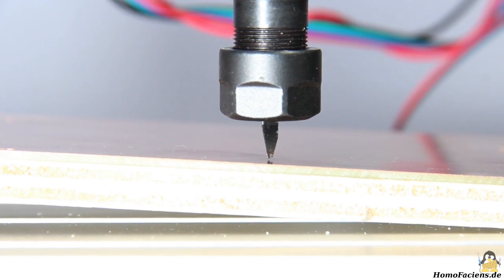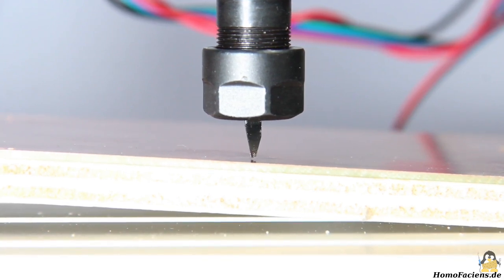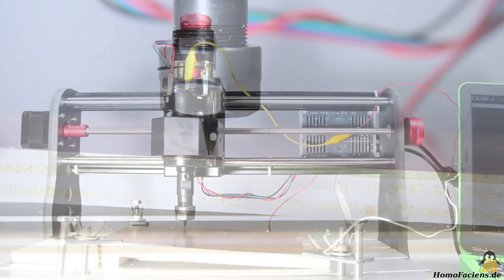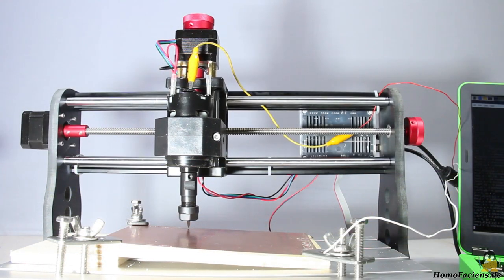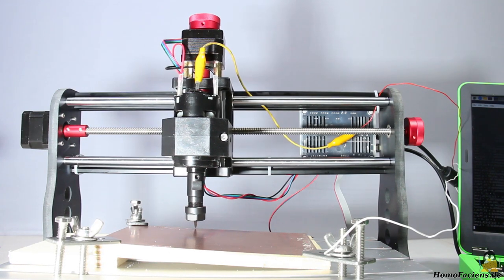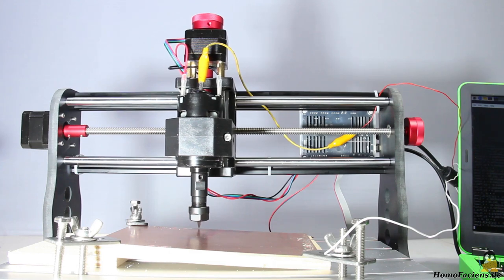It can be seen that this works well even with the extremely poorly attached circuit board. In the long shot you can see how the handwheel of the Z axis turns while the software compensates for the inclined plane.